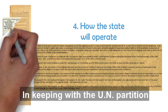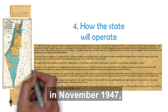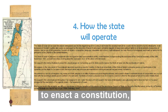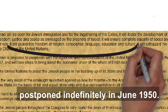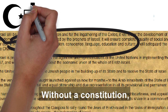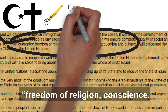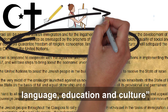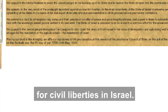In keeping with the U.N. Partition Resolution for Palestine in November 1947, the Declaration states the intention to enact a constitution, although that objective was postponed indefinitely in June 1950. Without a constitution, the Declaration's phrase guaranteeing freedom of religion, conscience, language, education, and culture serves as the foundation for civil liberties in Israel.